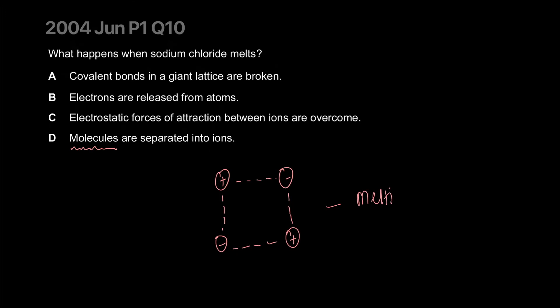Electrostatic forces of attraction, these dotted lines are broken. When you heat it enough the energy of these atoms become so high they can overcome these attractive forces and separate from their lattice. That's essentially what melting is. If these forces are overcome, that's melting. C is our correct answer.